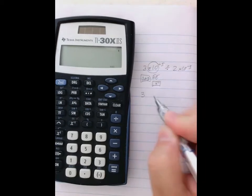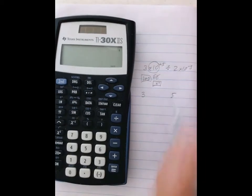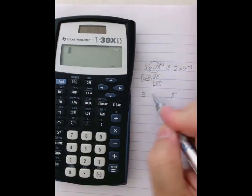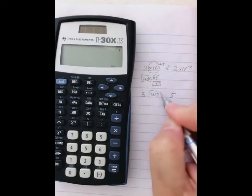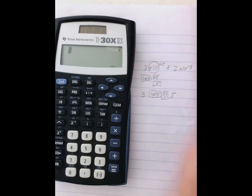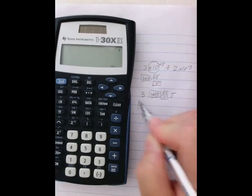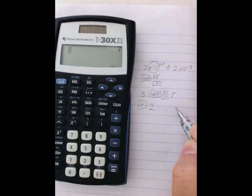So it goes like this. 3 times 10 to the 5th, all that goes in here: 2nd EE, divided by 2 times 10 to negative 3rd.